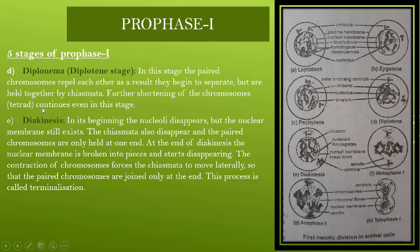The fourth stage is the Diplotene stage. The paired homologous chromosomes start to repel one another. Loop formations are also present. They remain connected to each other through chiasmata, as discussed in the previous stage. So when they are repelling, they will still be attached to each other through chiasmata.